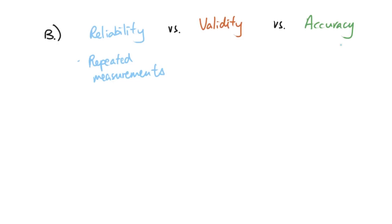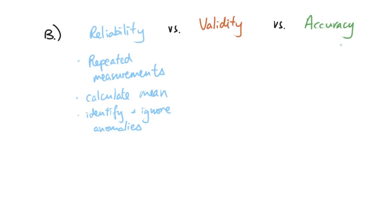For example, in a photosynthesis practical where you're changing the distance between a lamp and pondweed, you would take multiple measurements at each distance. From those repeated measurements, you need to calculate a mean to use for comparisons. But before that, you also need to identify and ignore any anomalies. Sometimes one value is completely out of trend due to random errors — you don't remove it, but when calculating the mean, you do not include that anomalous value.